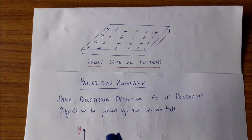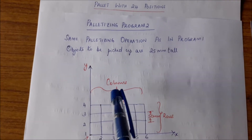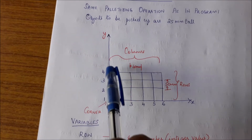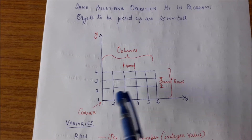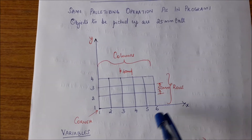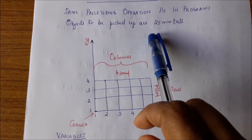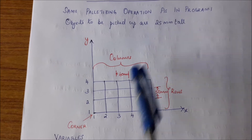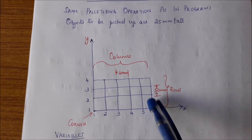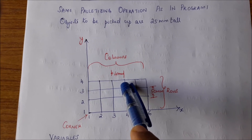Let us continue to write palletizing programs. We had a pallet with 24 positions, and we can write that palletizing program in a different way. This diagram has the same number of rows — 1, 2, 3, 4 — and the same 6 columns. We need to place a part at every intersecting point, giving us 24 locations. The objects to be picked up are 25 mm tall, the distance between rows is 50 mm, and the distance between columns is 40 mm.